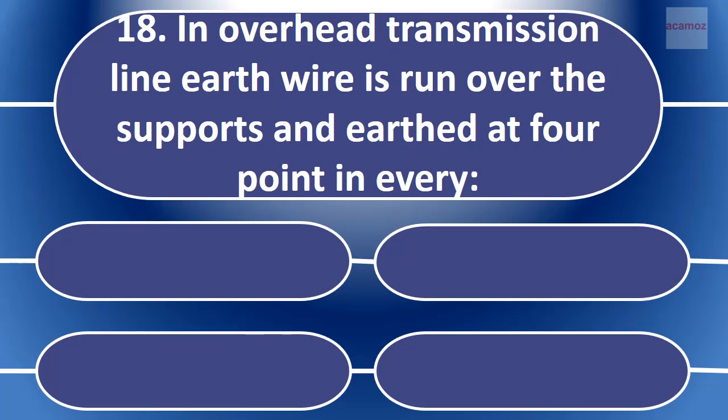In overhead transmission line, earth wire is run over the support and earthed at four points.